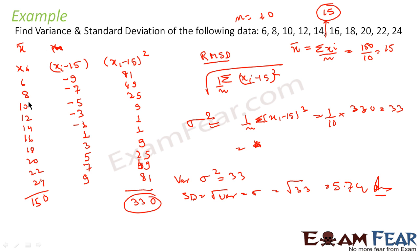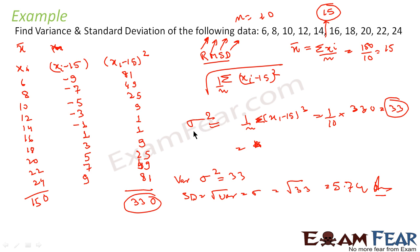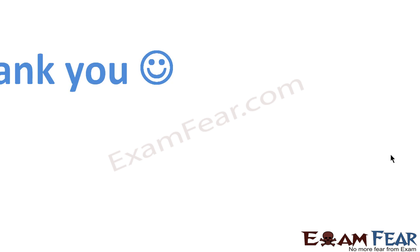Very simple. We had the xi values, found the mean first. Then found the deviation of each value from the mean, squared the deviations, added them all and divided by n to get the mean of squares — that is variance = 33. Then took the square root to get standard deviation = 5.74. Standard deviation is nothing but root mean square deviation.